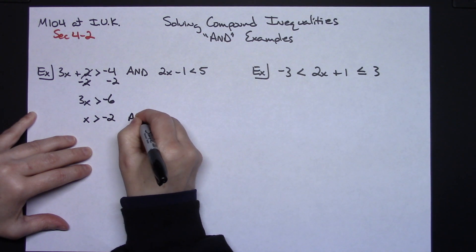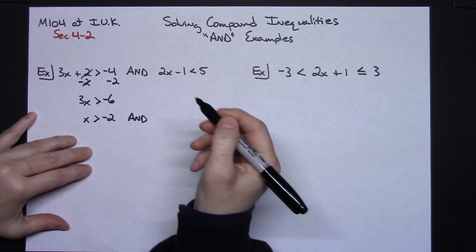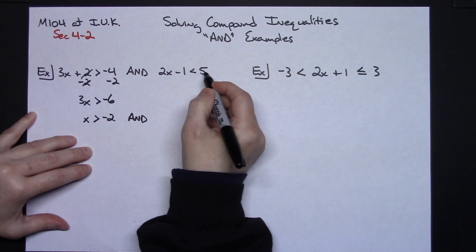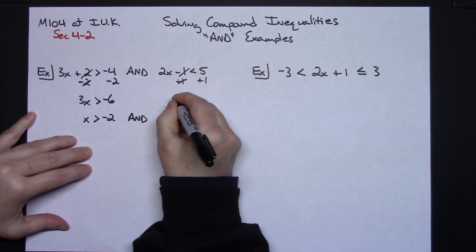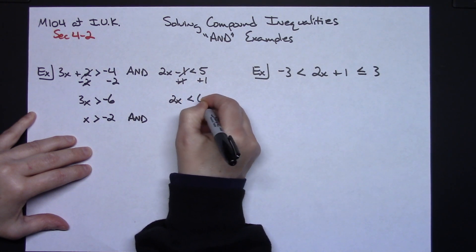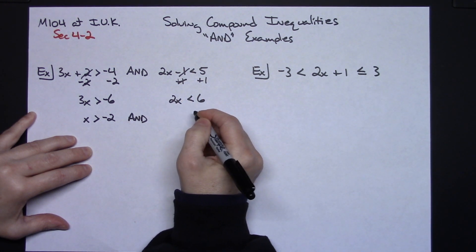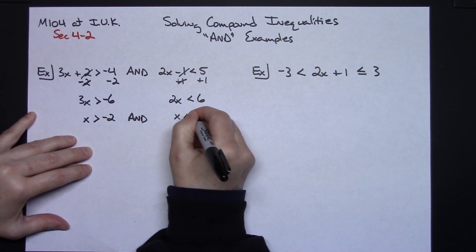I'm going to go ahead and write the word AND down here again so we will remember that that's there. Up here on this inequality, we'll go ahead and solve it. We'll add 1 to both sides of the equation. So then I'll have 2x is less than 6. Going ahead and dividing by 2, we'll have x is less than 3.